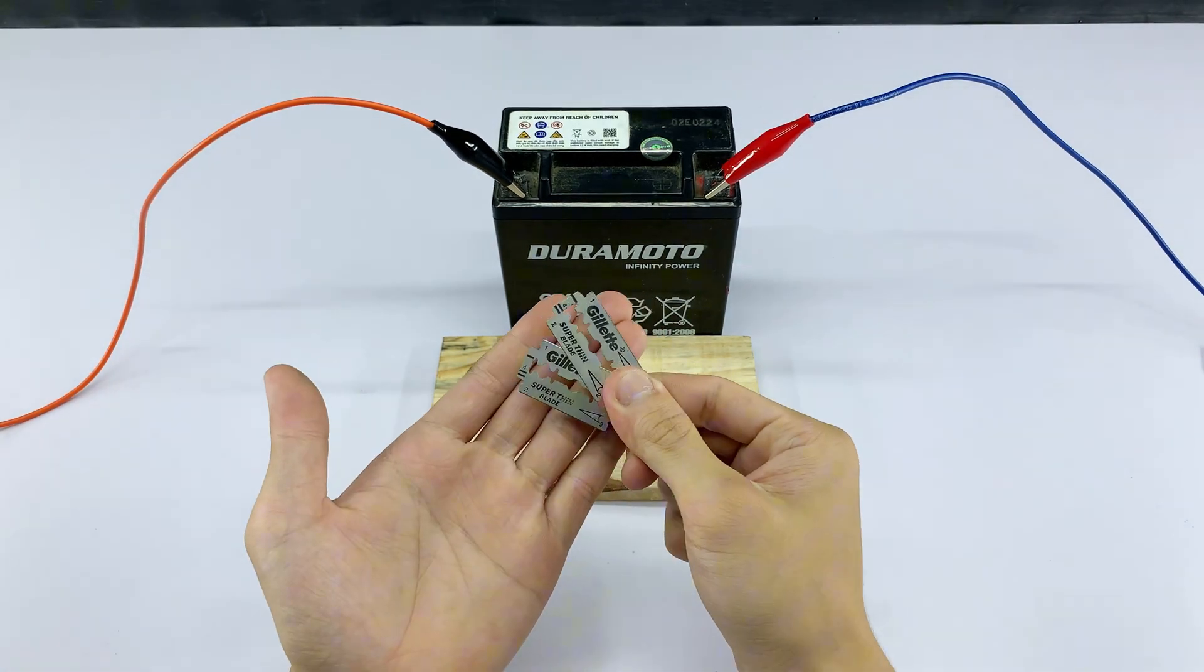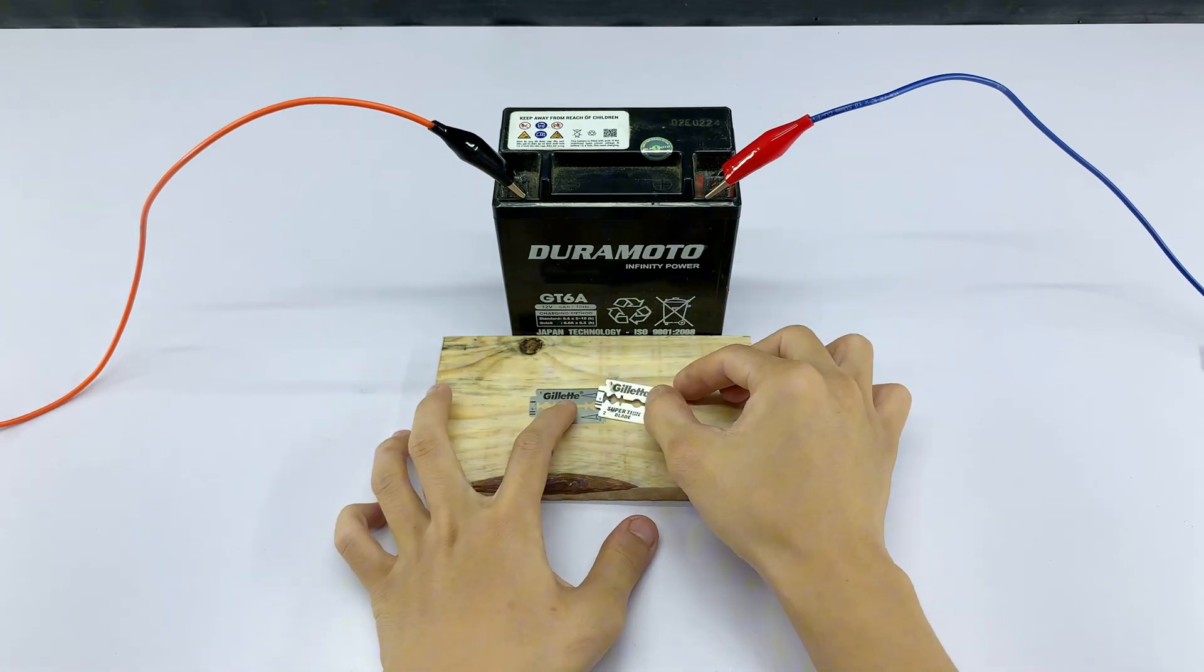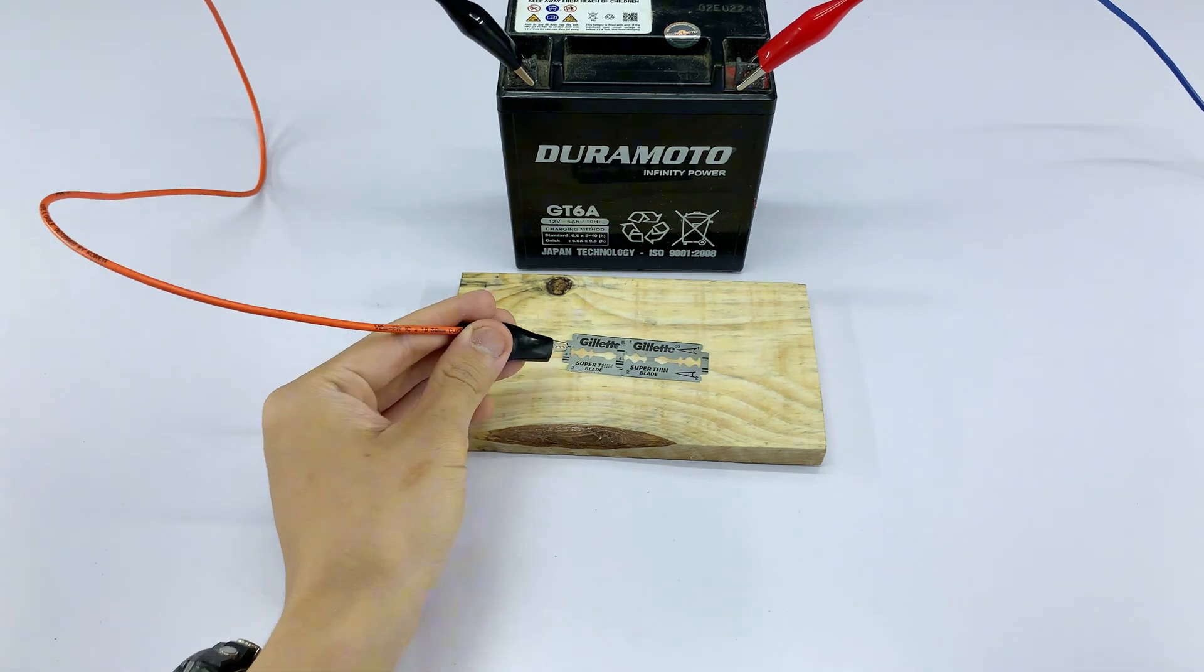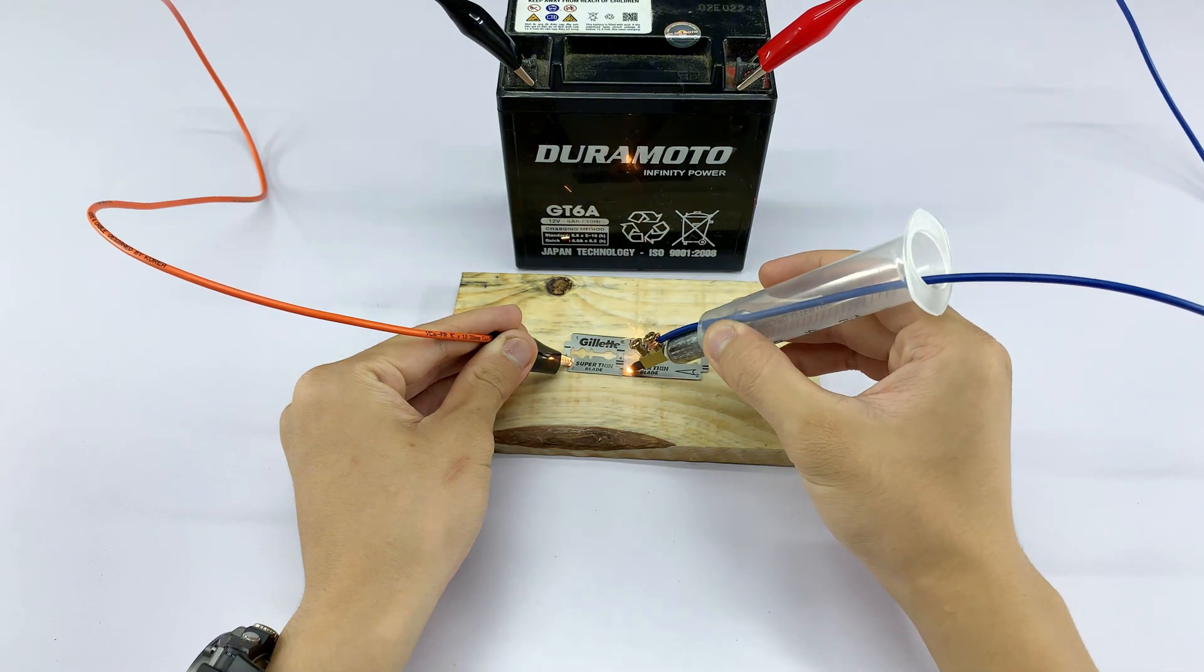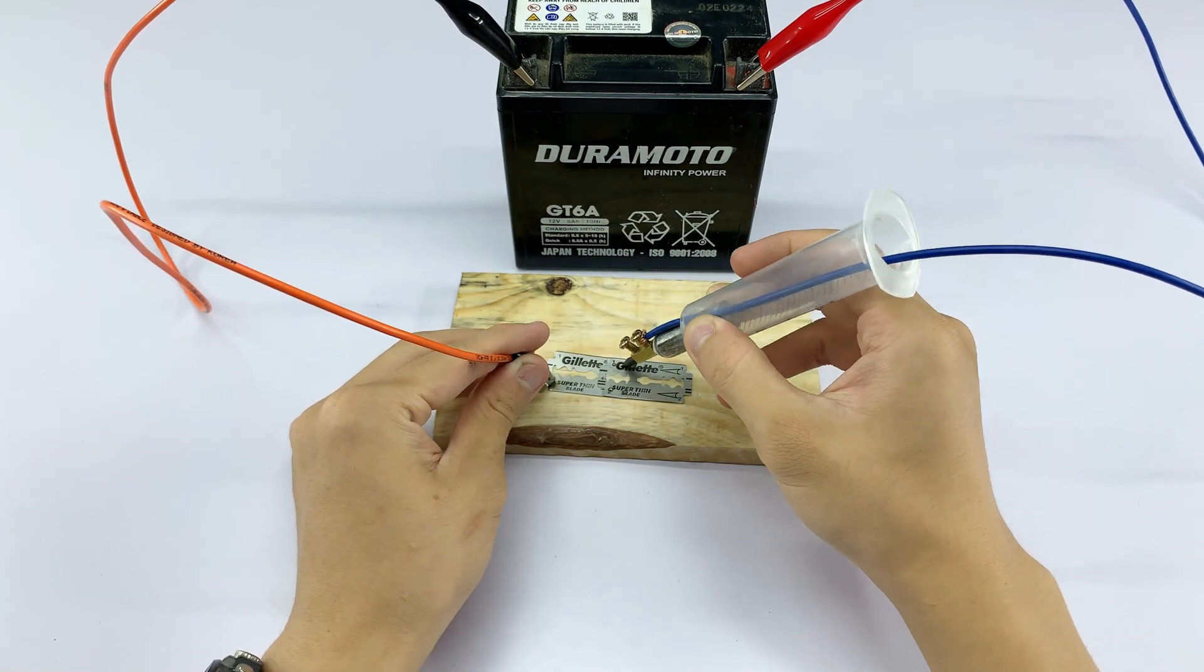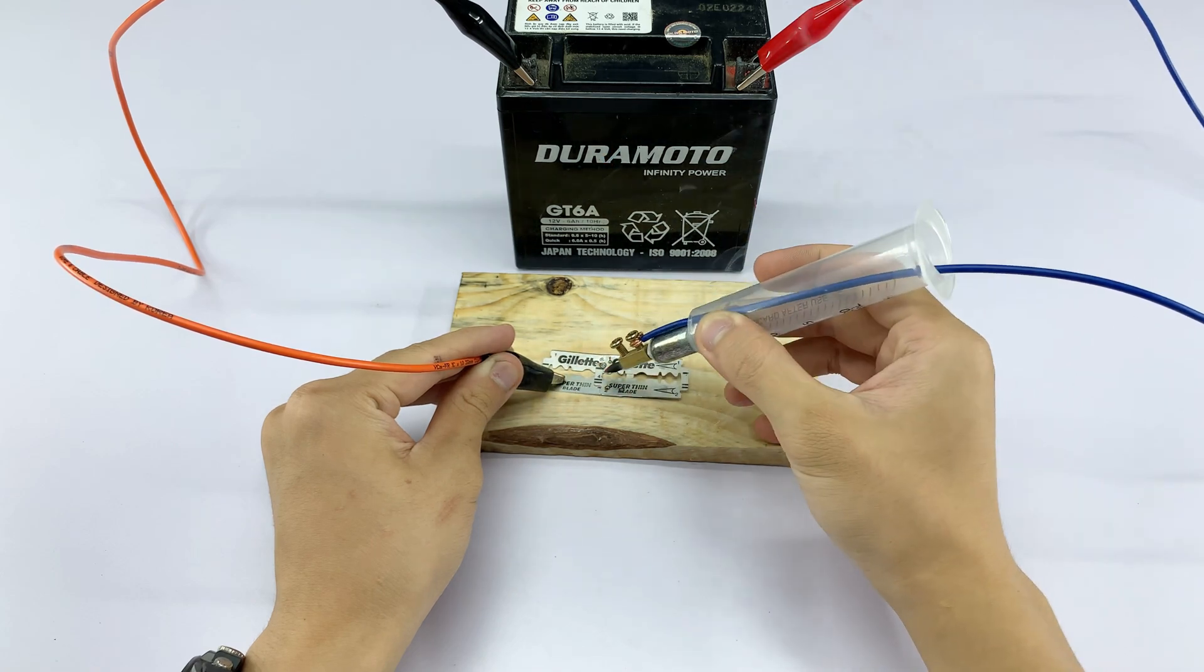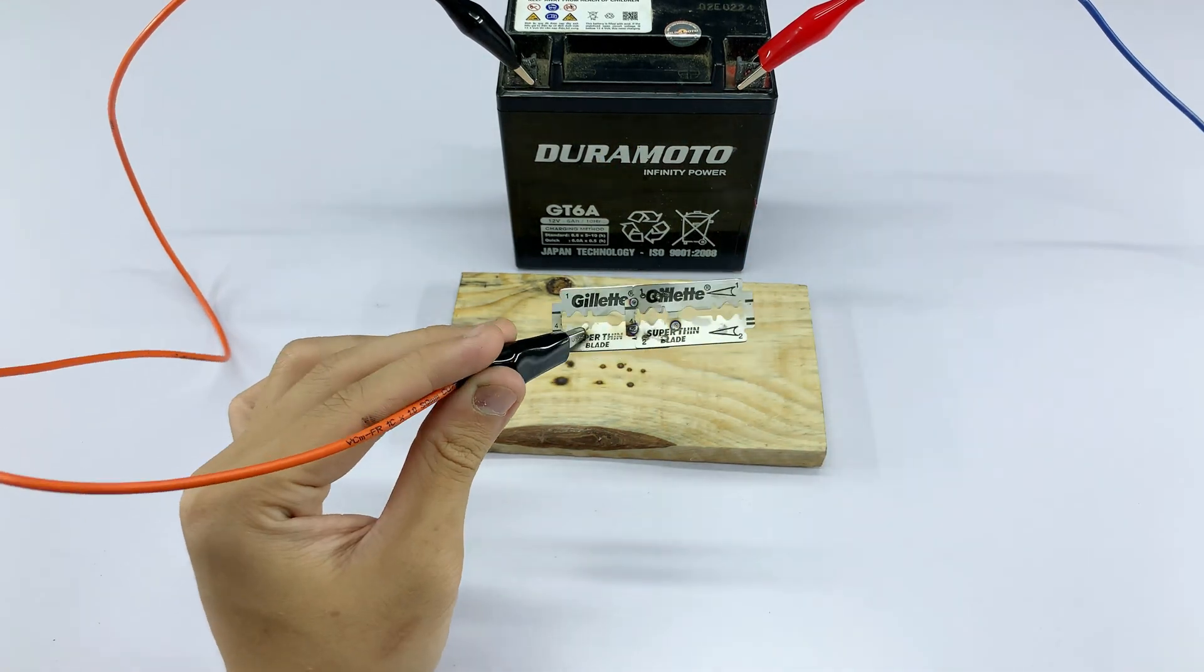I'll grab a razor blade, which we'll need for some demonstration later. I'll connect the alligator clips to this battery and then connect one clip to the razor blade. Watch closely as I touch our homemade tool to the blade. See that? It melts the metal instantly. This shows just how effective this simple tool can be for tasks like soldering.